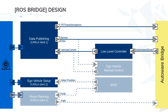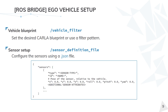To configure and spawn an ego vehicle using the ROS bridge, we have two main points. On one hand, we can choose the Carla blueprint we want to use as the ego vehicle through the vehicle filter ROS parameter, where we can set a blueprint ID or a pattern directly. On the other hand, the sensor configuration can be customized via a JSON file, allowing us to customize the pose of each sensor relative to the vehicle and all additional sensor attributes. Almost all sensors provided in Carla are available, and a link to the default sensor configuration is provided in the notes.